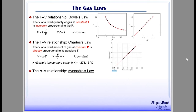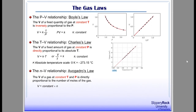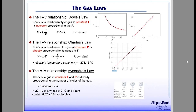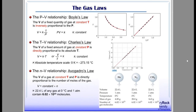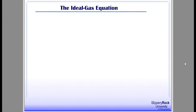Avogadro's Law shows how volume and moles of gas are related. It states that the volume of gas at constant temperature and pressure is directly proportional to the number of moles of the gas, expressed as V = constant × n. Interestingly, the volume of one mole of any real gas is 22.4 liters at 0°C and 1 atm. The volumes of three real gases — helium, nitrogen, and methane — are shown under the condition of 0°C and 1 atm.